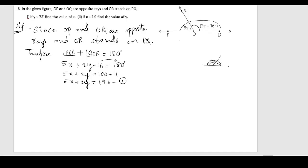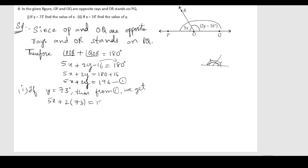Now for the first condition: if y equals 73 degrees, we substitute into the first equation. So 5x plus 2 times 73 equals 196, giving us 5x plus 146 equals 196.